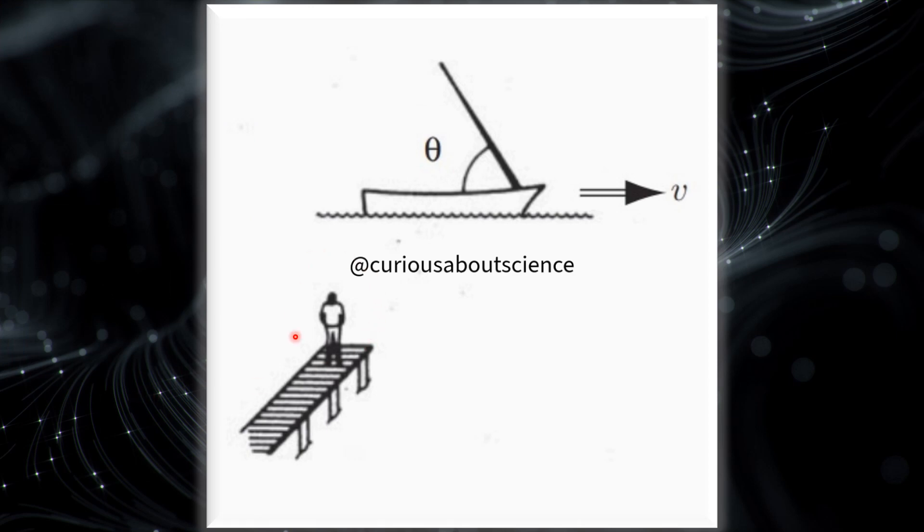Let's note that here is our observer on the dock. The sailboat is traveling to the right at speed v. Meanwhile, the mast is creating an angle of theta with the deck of the boat. Deck belongs to the boat, dock belongs to the human, and let's see how we can solve this question.